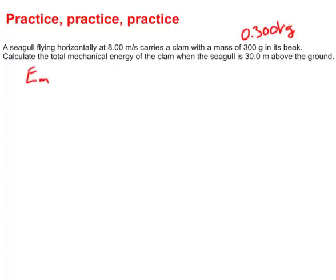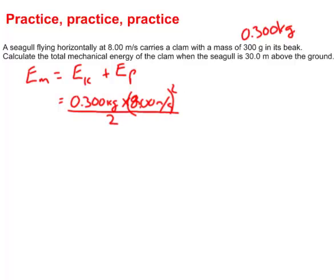Well, we were told that the mechanical energy is equal to the kinetic energy as well as the potential energy added together. Now, that means that the kinetic energy is mass times velocity squared divided by 2. So here we go. The mass was 0.300 kilograms, and the velocity it was flying at was 8.00 meters per second. Mass times velocity, that has to be squared and divided by 2. And add to that the potential energy.